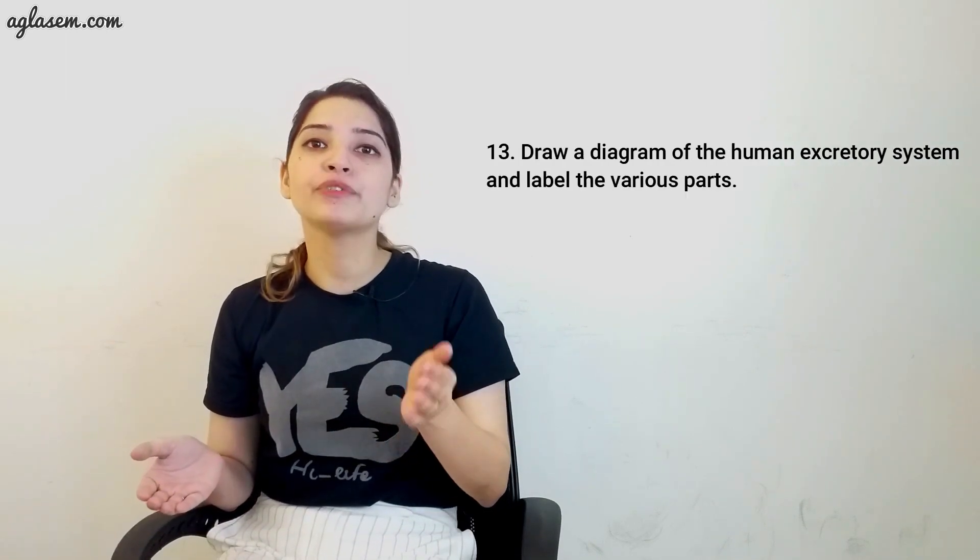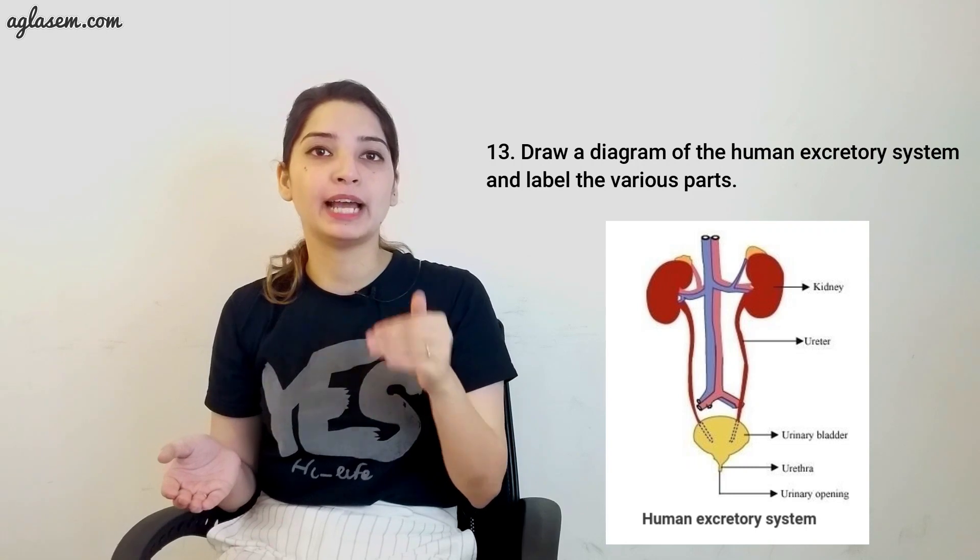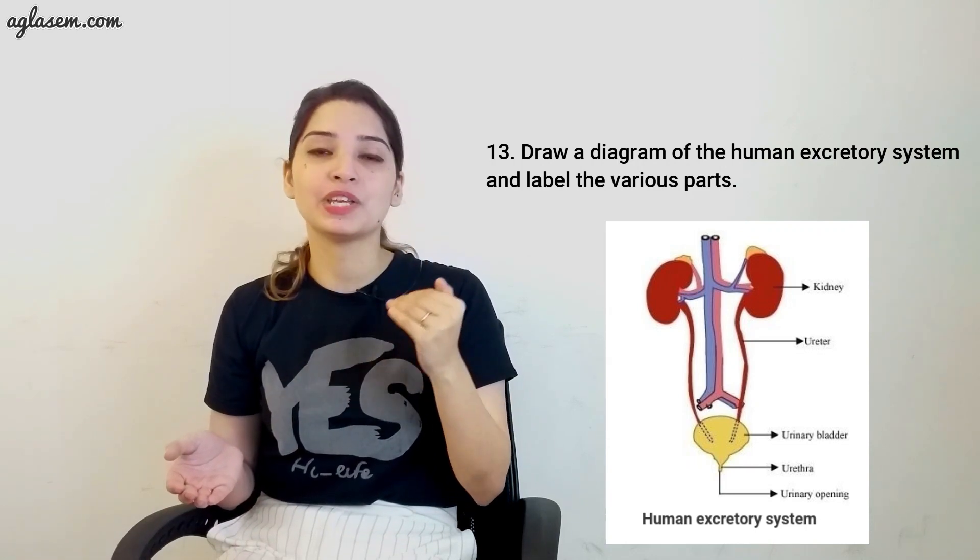And now, the last question is, draw a diagram of human excretory system and label the various parts. Here we have the labeled diagram — just draw it and present it well. This is all from this chapter, Transportation in Animal and Plants. If you have any doubts related to these questions, feel free to get back to us by writing in the comment section below. For other academic support, keep browsing aglasm.com. Please don't forget to like and share this video, and do subscribe to our channel to receive instant notifications for other similar videos. Thank you, bye-bye.